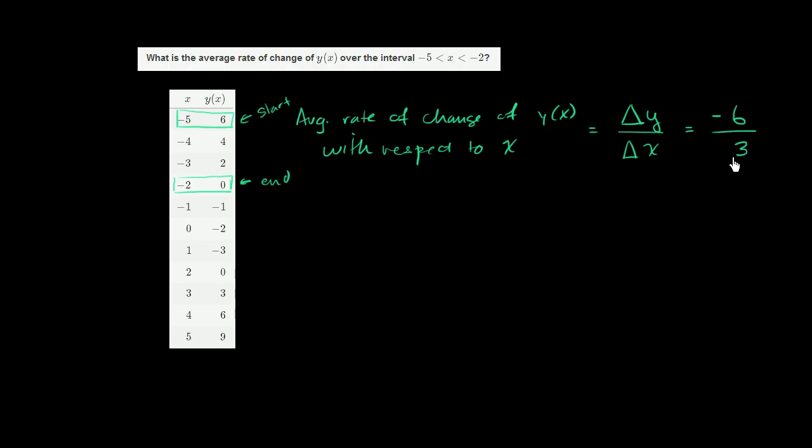So when we increased x by 3, we decreased y of x by 6. Or if we want to simplify this right over here, negative 6 over 3 is the same thing as negative 2. So our average rate of change of y of x over the interval from negative 5 to negative 2 is negative 2.